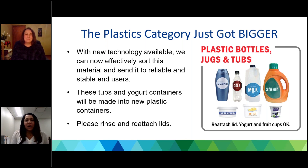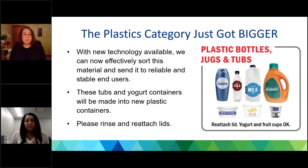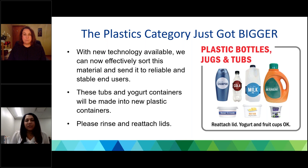Previously, our plastics category included bottles and jugs — basically if the base was wider than the neck. Now, because of advanced technology, we're able to accept these tub containers. Rumpke is really dedicated and committed to recycling; we're constantly working to see what else is out there and who we can partner with. This new technology was developed to assist with the smell and color of this particular plastic, which made it difficult to recycle in the past. We've made some adjustments at our recycling facilities to accommodate for this material.